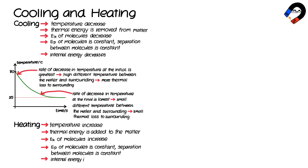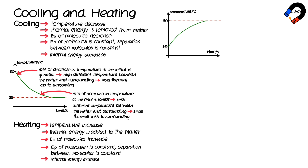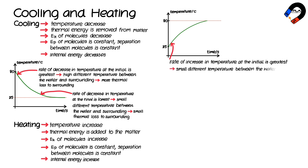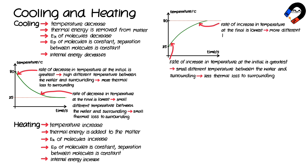Therefore, the internal energy of matter increases. When water at an initial temperature of 25°C is heated to 80°C, the resulting graph of temperature against time shows that the rate of increase in temperature is greatest initially because the small temperature difference between the water and surroundings means less thermal energy is lost. The rate of increase is lowest at the end because the larger temperature difference means more thermal energy is lost to the surroundings.